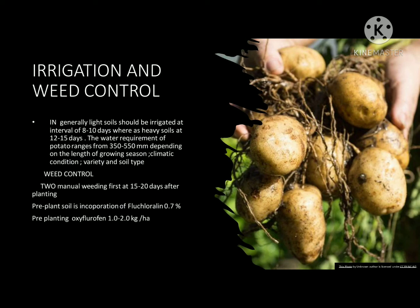Irrigation: light soils should be irrigated at intervals of 8 to 10 days, whereas heavy soils at 12 to 15 days. The water requirement of potato ranges from 350 to 550 mm depending upon the length of growing season, climatic conditions, variety, and soil type. Weed control: manual weeding first at 15 to 20 days after planting. Pre-planting soil incorporation of fluchloralin and pre-plant oxyfluorfen at 1.0 to 2.0 kg per hectare.